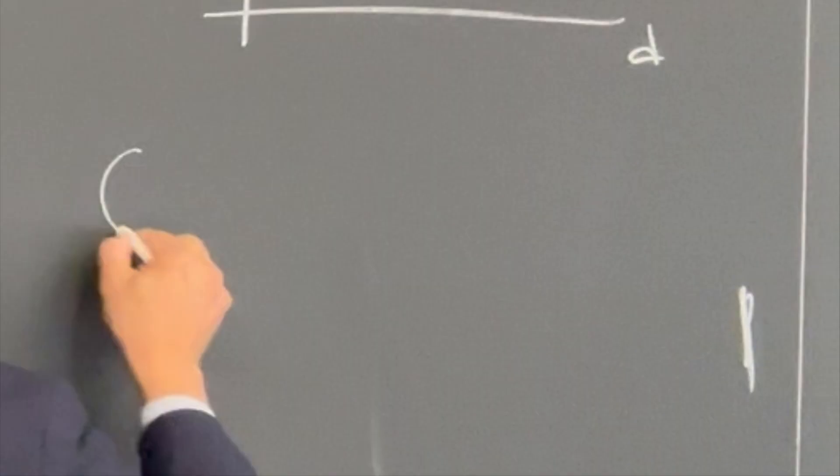You cannot get any slope from the area vs. radius graph because it's a quadratic relationship. So we're going to linearize it by squaring the x-axis — using r squared — so area versus r squared linearizes the quadratic relationship to a linear relationship, so you can get the slope, which is π.